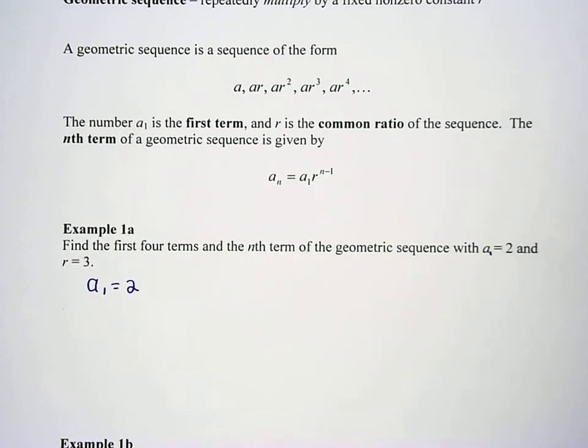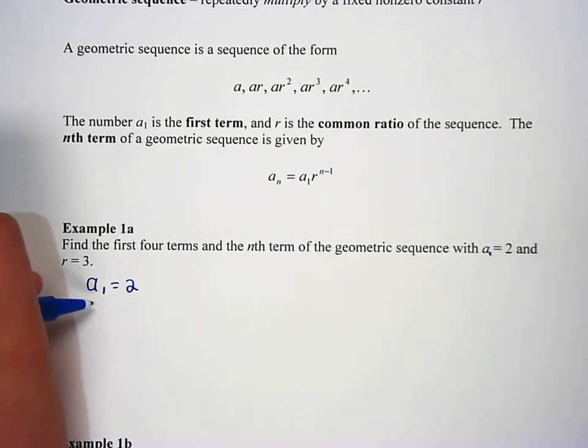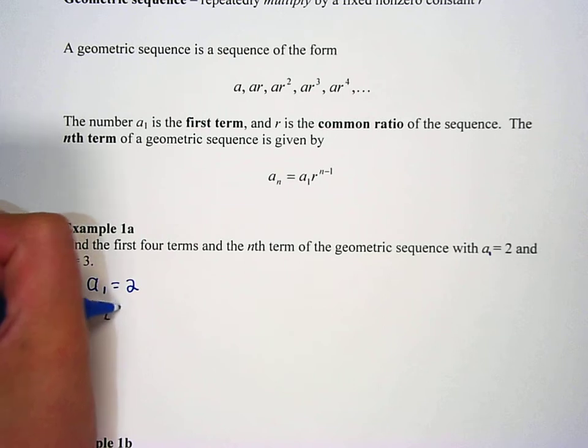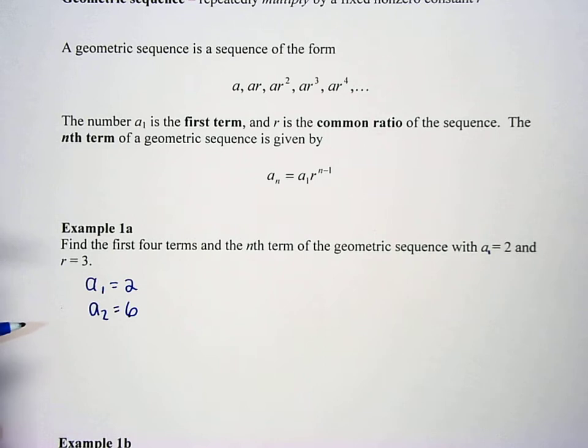To find the second term, we're going to take the first term and multiply it by 3. So the second term is going to be 6. Yep, 2 times 3, which is 6, so a sub 2 equals 6.